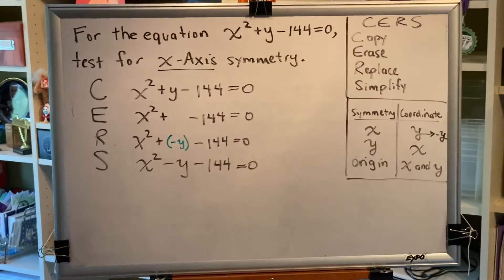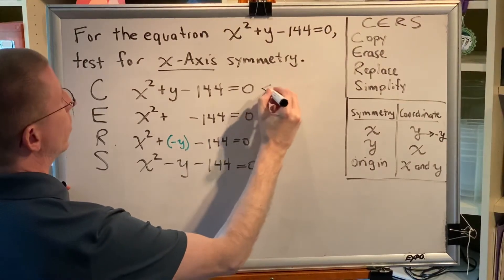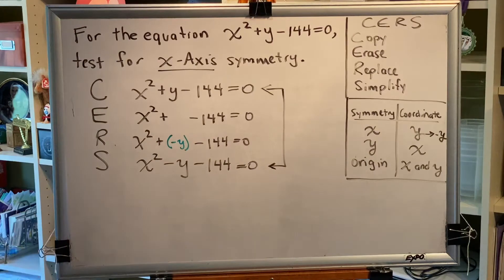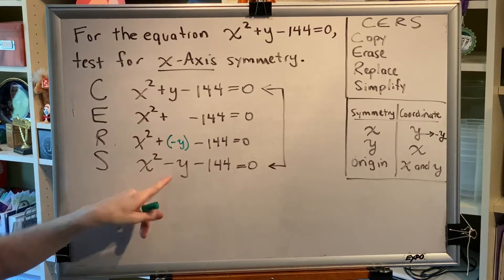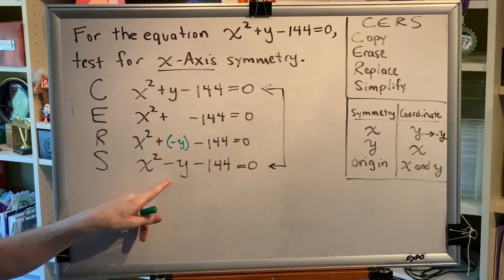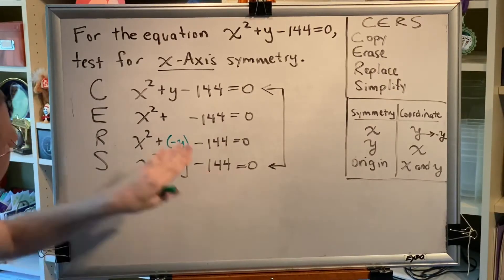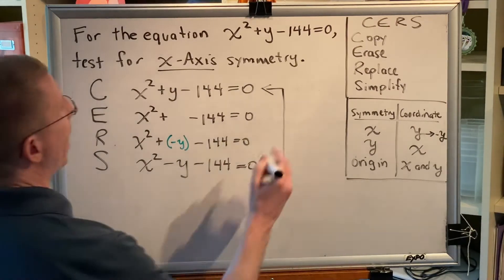We've completed the CERS process. Now we're ready to make our comparison — we need to know if the equation we started with is equivalent to the equation we ended with. The answer is no. The equation we started with has x squared plus y, and the equation we ended with has x squared minus y. There's nothing we can do to both sides to make them equal. Therefore, there is no x-axis symmetry.